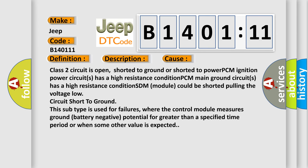This diagnostic error occurs most often in these cases: Class 2 circuit is open, shorted to ground, or shorted to power. PCM ignition power circuits has a high resistance condition. PCM main ground circuits has a high resistance condition. SDM module could be shorted pulling the voltage low.